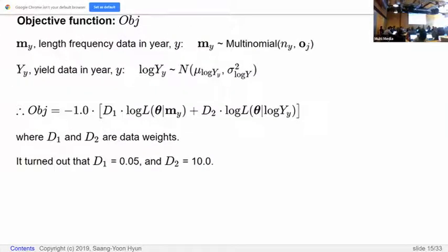And we have the objective function by applying multinomial likelihood for length frequency data in year y. And we applied lognormal likelihood for yield data. And we take a negative log likelihood and summation, and that is a total objective function. And D₁, D₂, data weights, they turned out to be D₁ 0.05, D₂ 10.0.